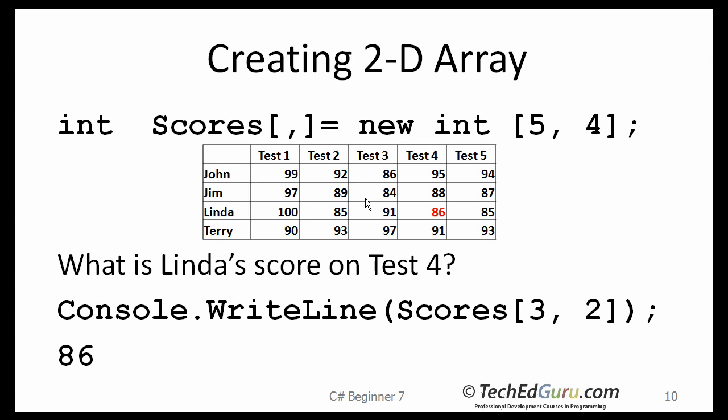To print Linda's score on test number four, this is the syntax I use, scores. The first index is three, which is referring to column number four, test four. The second index is two, which is referring to third student, Linda. And the output I get is 86.